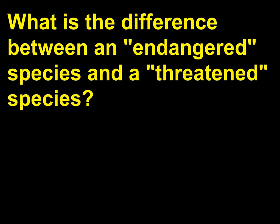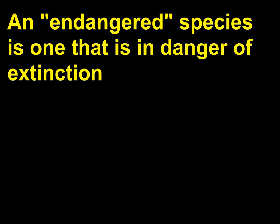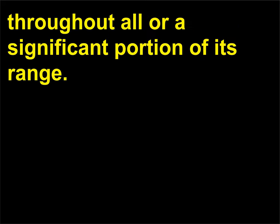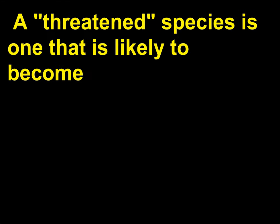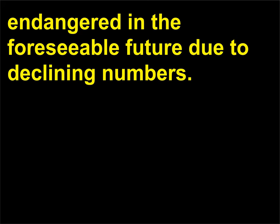What is the difference between an endangered species and a threatened species? An endangered species is one that is in danger of extinction throughout all or a significant portion of its range. A threatened species is one that is likely to become endangered in the foreseeable future due to declining numbers.